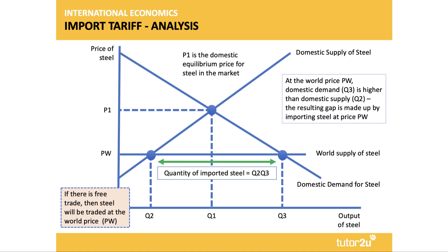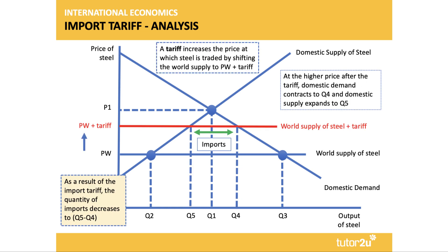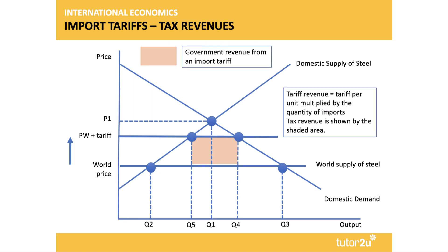In this case we're looking at a possible tax on steel. The world supply of steel is much cheaper than the domestic price, leading to a high level of imports. The tariff isn't designed to eliminate imports — it's designed to minimize or control them. The red line shows the world supply price plus the tariff, so the tariff is the vertical shift in that curve. As a result, the price at which steel is traded goes up, leading to expenditure-switching effects: demand for steel falls, domestic supply expands, and the quantity of imports falls to Q5–Q4.